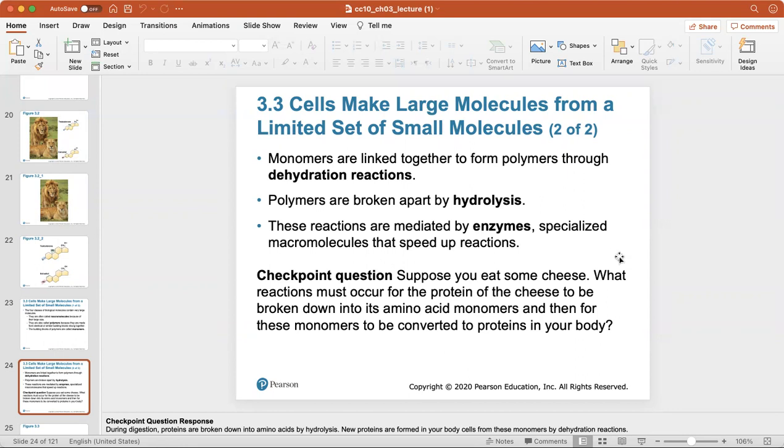A checkpoint question: suppose you eat some cheese, what reactions must occur for the protein of the cheese to be broken down into its amino acid monomers and then for these monomers to be converted into your body proteins? First, for the cheese to be broken down, those are broken down by hydrolysis, and the amino acid monomers that are coming from the protein in that cheese will then be linked together to form different proteins by dehydration reactions.